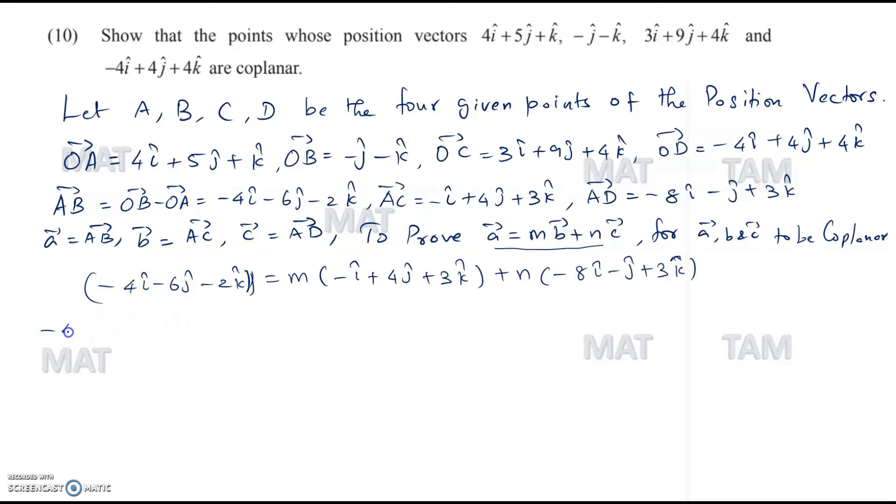Here the i coefficient will be minus 4 is equal to minus M minus 8N. This can be our equation number 1. Similarly, for the second one, minus 6 is equal to 4M minus N. This is our second equation. And our third equation is minus 2 is equal to 3M plus 3N.